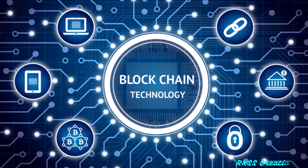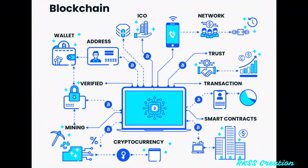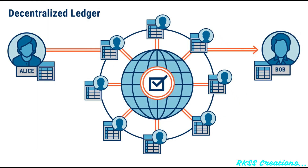All new information that follows a freshly added block is compiled into a newly formed block that will then also be added to the chain once filled. A database structures its data into tables, whereas a blockchain structures its data into chunks — blocks that are chained together. This system also inherently makes an irreversible timeline of data when implemented in a decentralized nature. When a block is filled, it is set in stone and becomes a part of this timeline. Each block in the chain is given an exact timestamp when it is added to the chain.